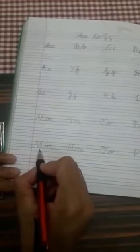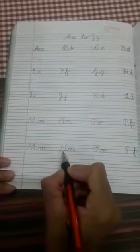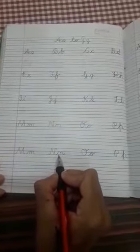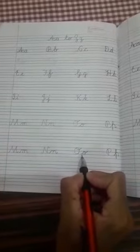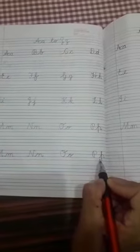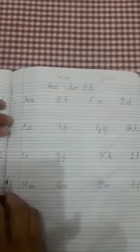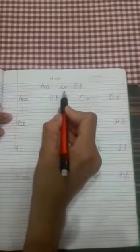Let's revise. M for mango, N for nest, O for orange and P for parrot. Now your today's task is you have to write letters A to P like this.